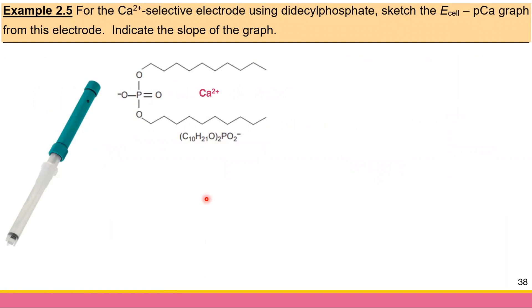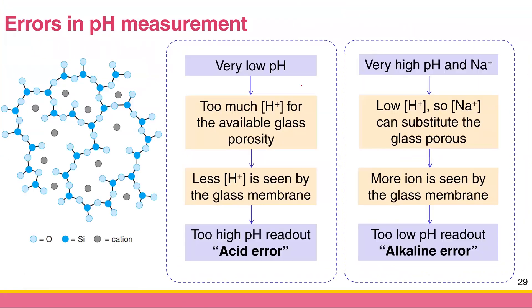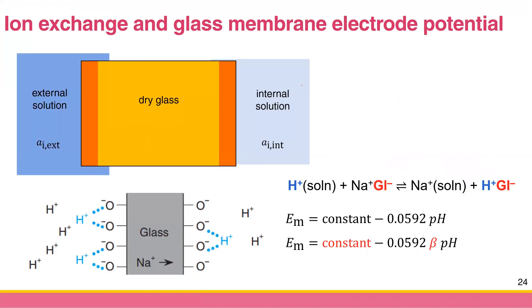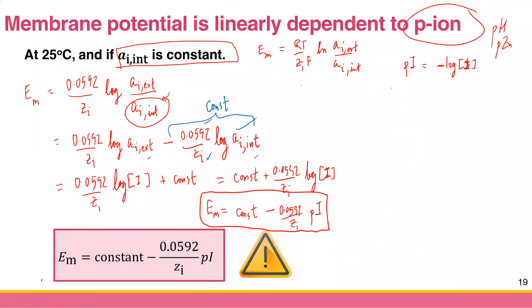Let's do an example to reinforce the concept of membrane potential. For a calcium-selective electrode, the ligand used is typically didecyl phosphate. The question asks you to sketch the E_cell versus pCa graph and indicate the slope. The key relationship is that the membrane potential E_M equals a constant minus 0.0592 divided by Z times pI.